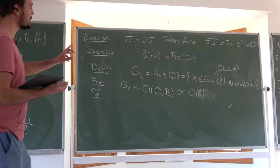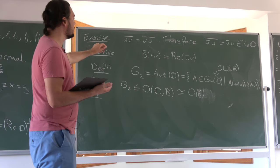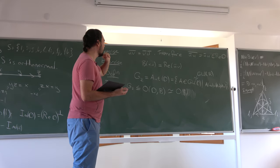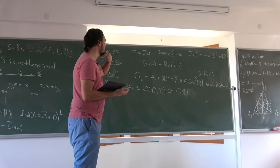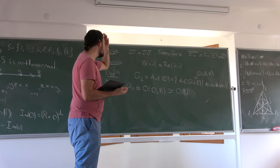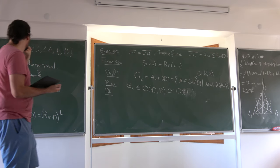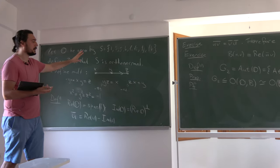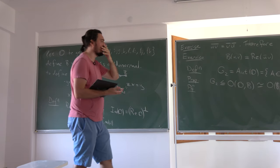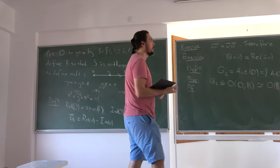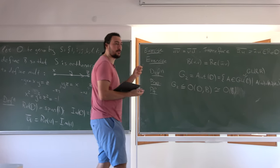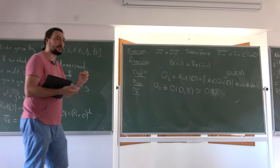So we have: G2 is an S3 fibration over V_{2,7}, which is an S5 fibration over S6. V_{2,7} is the unit tangent bundle of S6 — you project to the first vector to get S6, and the second vector lives in the tangent sphere S5.